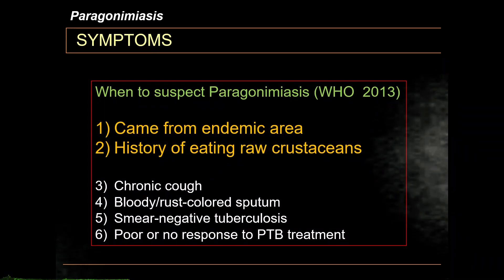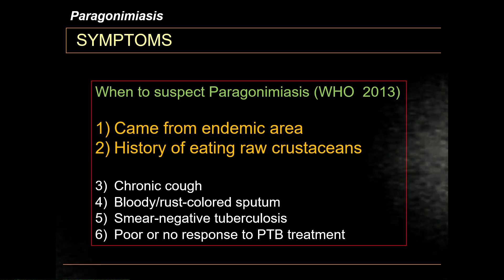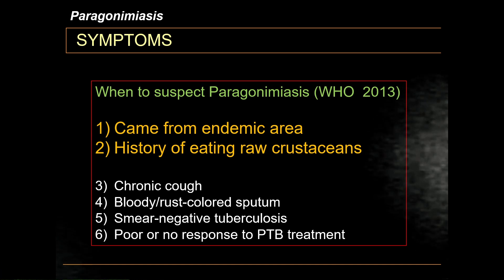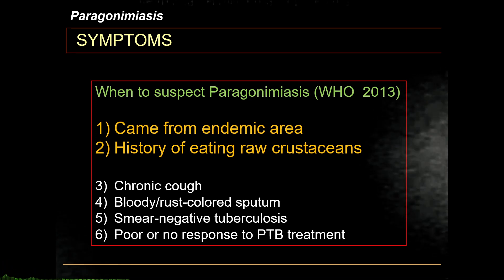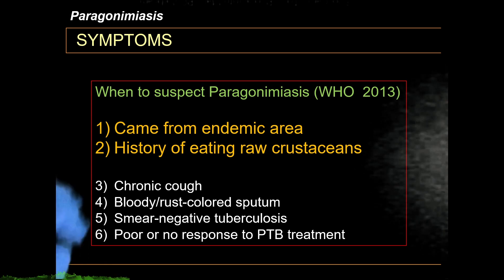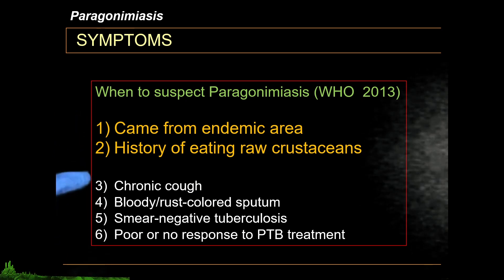Suspicion for Paragonimus ova is raised if the patient came from an endemic area and has a history of eating raw freshwater crustaceans. Minor criteria include chronic cough greater than two weeks, bloody or rust-colored sputum, smear-negative tuberculosis stains, and poor or no response to PTB treatment. A high degree of suspicion requires both major criteria plus at least one of the four minor criteria.